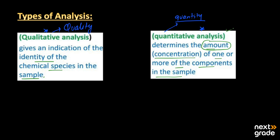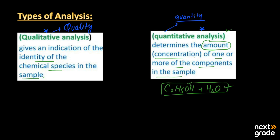The word 'amount' in quantitative analysis means the quantity — how much of a compound is present. For example, if we have a solution of alcohol, which is ethanol (C2H5OH), mixed with water, we can use analytical techniques to measure the percentage of the alcohol present. So those are the two types of analysis: qualitative and quantitative.